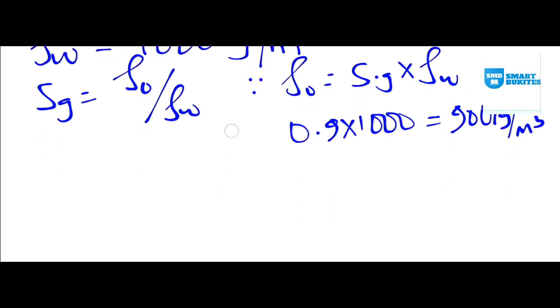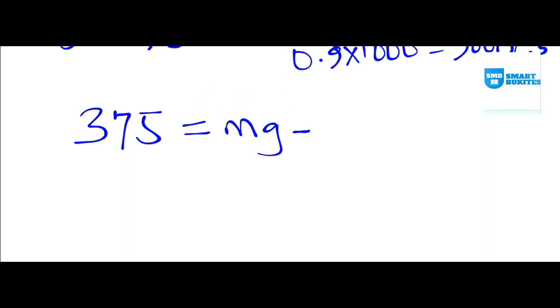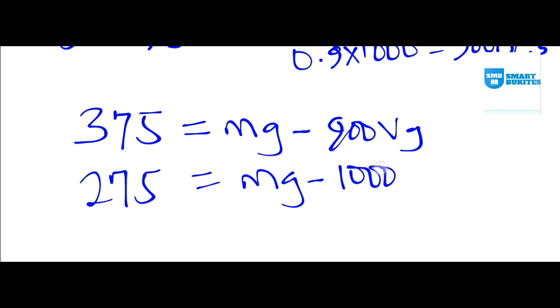Now we can insert the two densities in our equations and find the volume. The first equation: 325 equals mg minus density of oil, which we find to be 900 kilogram, then Vg. For water, 275 equals mg minus the density of water is 1000 kilogram per meter cube, then Vg.